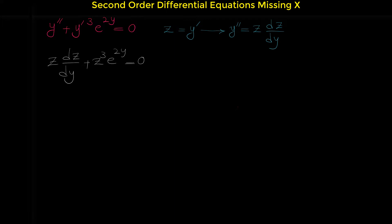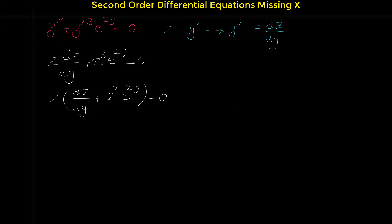Now we can simply separate variable z from variable y to get a separable differential equation. Note that we can factor z from both the first and second terms. So if we factor z, we have z times the quantity dz over dy plus z squared e to the 2y equals 0.